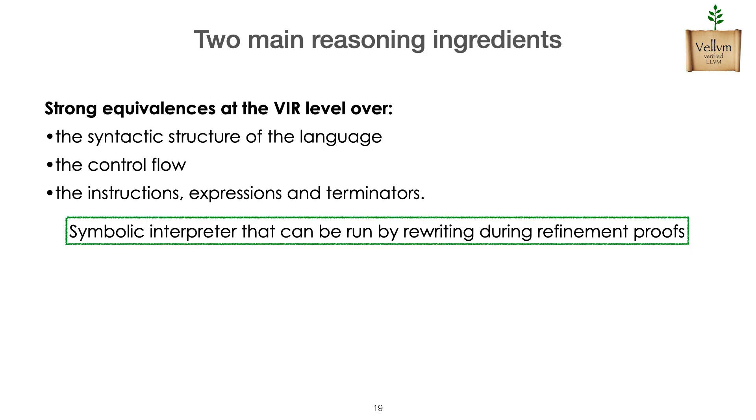Concretely, it gives us two main reasoning ingredients. The first one is this combination of strong equivalencies that we have at the VIR level. We have equivalencies about the syntactic structure of the language, about the control flow, but also about the instruction, expression, and terminators. When we put all of this together, it gives us some kind of symbolic interpreter that we can run by rewriting during any refinement proofs.